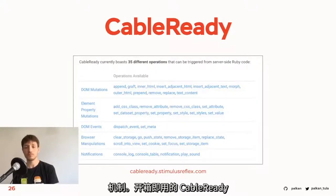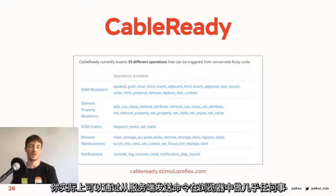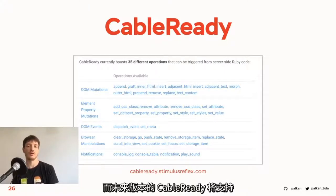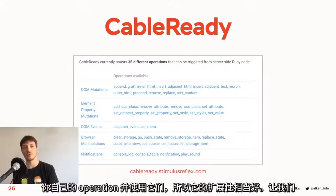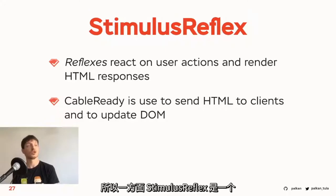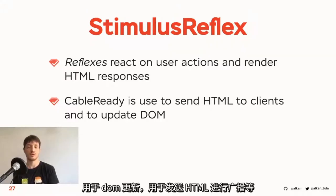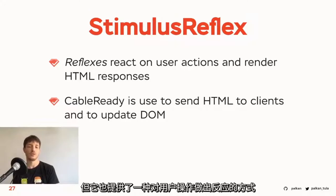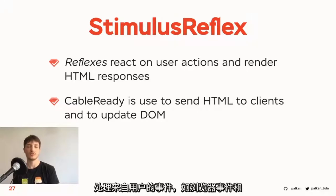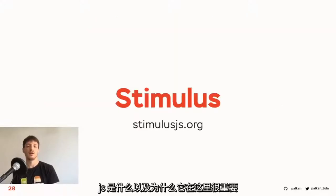Out of the box, CableReady provides dozens of different operations you can use — you can do pretty much anything in your browser by sending commands from the server. In a future version, CableReady will support custom operations so you can register your own and use them — it's extensible. Now let's come back to StimulusReflex. StimulusReflex is a framework built on top of CableReady — it still uses CableReady for the DOM updating part, for sending HTML, for broadcasting and so on. But it also provides a way to react to user actions, to handle browser events. For that part, StimulusJS is used. Let's take a quick look at what StimulusJS is and why it's important here.